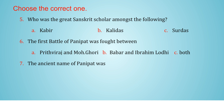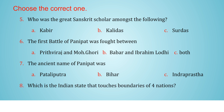7. The ancient name of Panipat was a. Pataliputra b. Bihar c. Indraprastha. 8. Which is the Indian state that touches boundaries of four nations? a. Jammu and Kashmir b. Bihar c. Rajasthan